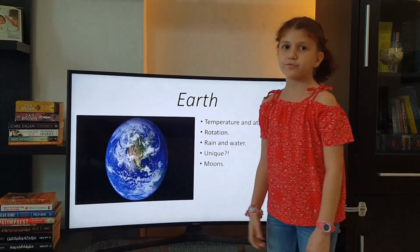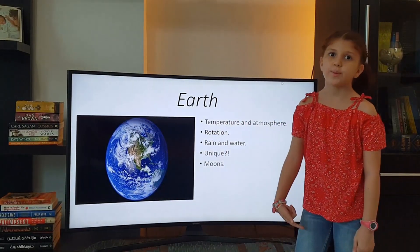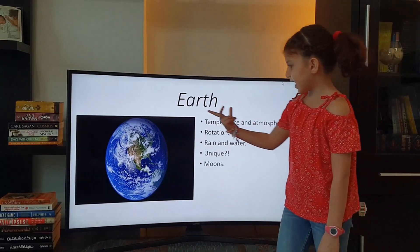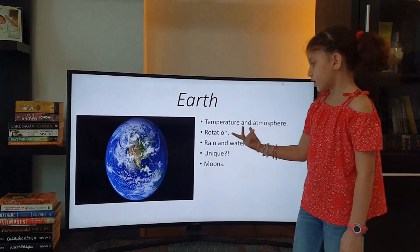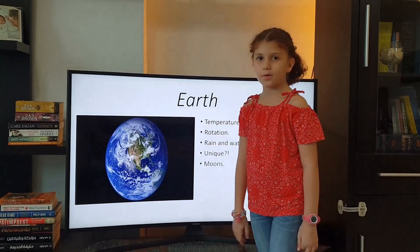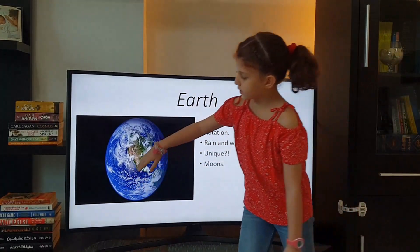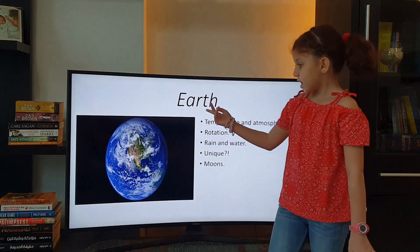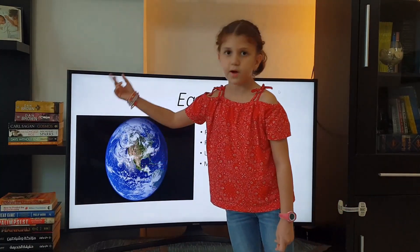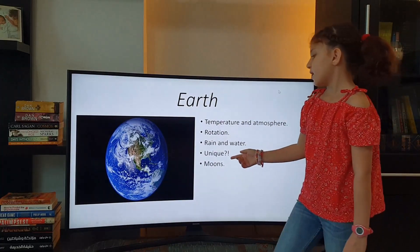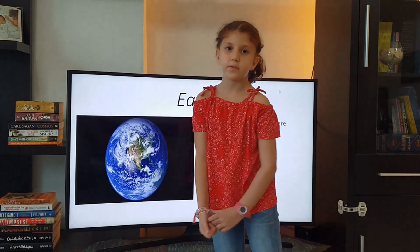Earth is the third planet from the Sun and the planet we live on. The average temperature is about 16 degrees Celsius, because of Earth's atmosphere — not so thick, but thick enough. It rotates in 24 hours. Day and night would have been the same length if Earth's axis weren't tilted about 23.5 degrees. Our Earth has water rain, and it is about 75% water. It's the only planet we know in the universe which has life.